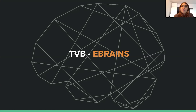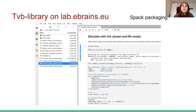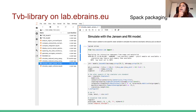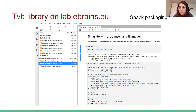In the eBrains context, we are making the TVB library available on the Jupyter Collab. We are currently working with the technical coordination team in order to have SPAC definitions for the TVB library, which is a workflow they have in place to help with updating the versions of libraries currently offered in the collab.